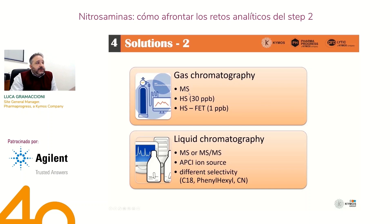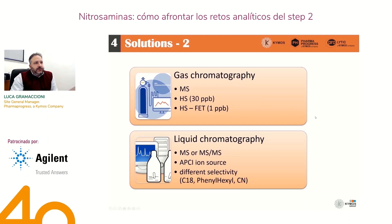We decided to use a headspace autosampler with a full evaporation technique in order to arrive at a low sensitivity of the method. The other method is by means of liquid chromatography coupled with a single-quad detector, APCI ion source, and a different selectivity in the stationary phase of the column we use, in order to have different possibilities according to the different requests of the client.